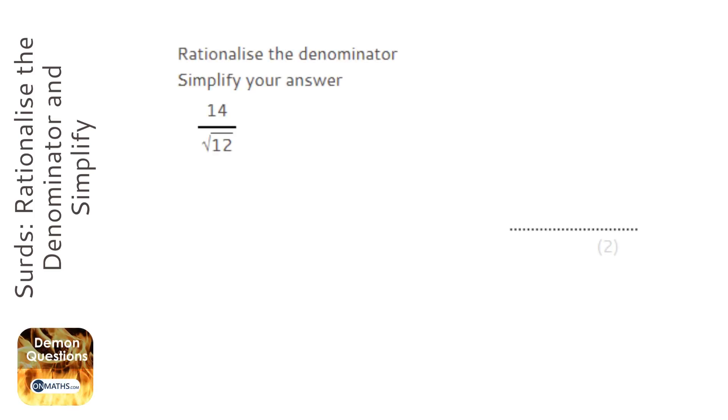When asked to rationalise the denominator, it means getting rid of the root from the bottom of the fraction. So for this question, what we need to do to get rid of that √12 from the bottom is multiply top and bottom by the root we want to remove from the bottom of the fraction.